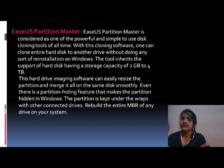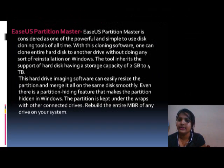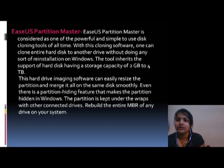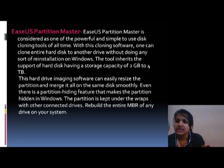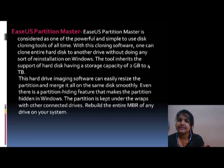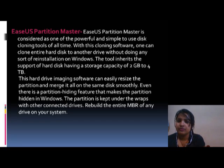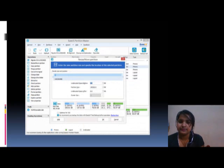The third software is ECU Partition Master. ECU Partition Master is considered one of the most powerful and simple-to-use disk cloning tools. With this cloning software, one can clone an entire hard disk to another drive without doing any sort of reinstall on Windows. The tool supports hard disks with a storage capacity of 2TB to 4TB. This hard drive imaging software can easily resize the partition and merge it all on the same disk smoothly. There is also a partition hiding feature that makes partitions hidden in Windows, and you can rebuild the entire MBR of any drive on your system.